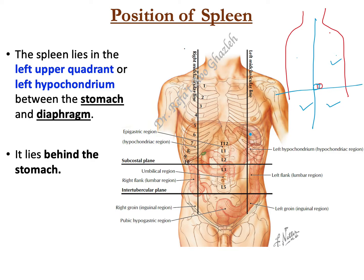Today I want to talk about the position of the spleen. If you look at the shadow of the spleen in the nine-division pattern, it's located in the left hypochondrium. If you divide the abdomen into four divisions, it is in the left upper quadrant.